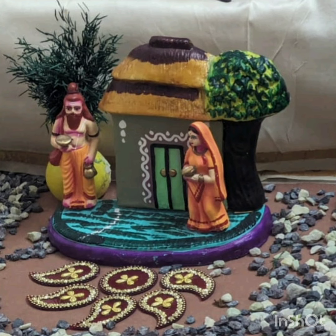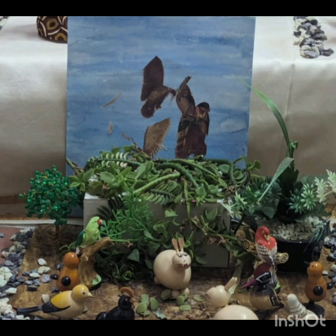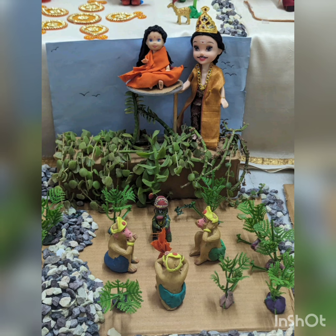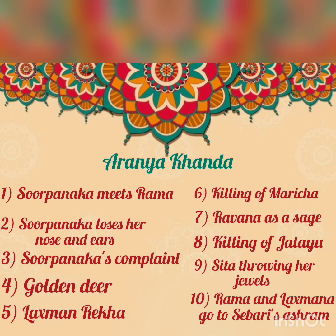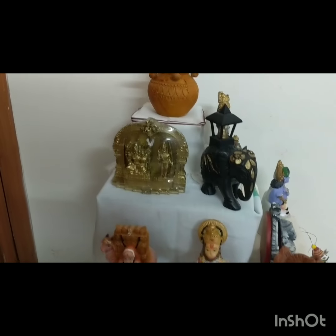Ravana seeks alms from Sita in the form of a sage. Sita, being helpless, crosses the line only to find that it was Ravana in the form of the sage. Jatayu tries to rescue Sita from Ravana, only to lose his life. Sita spots a group of monkeys in the forest and ties all her jewels in a bundle and throws it among them. Rama and Lakshmana, in search of Sita, reach Sabari's ashram, and she tells Rama to meet Sugriva, who will help him find Sita.